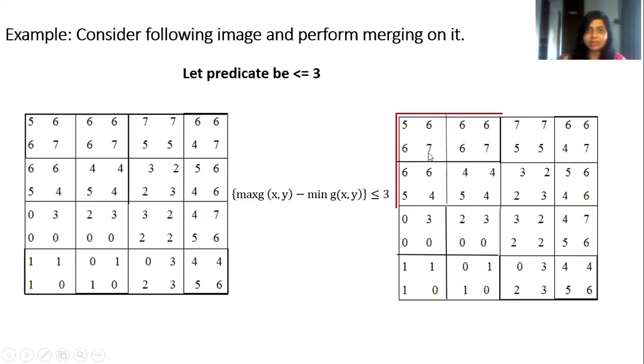I am going to explain this with the help of one example. So consider this image and perform merging on it. In this predicate threshold predicate is not mentioned and hence I have assumed that it should be less than or equal to 3. Why? Because maximum value is 7 and minimum is 0. So I have chosen it should be 3. Now how to go ahead.